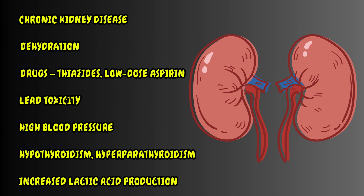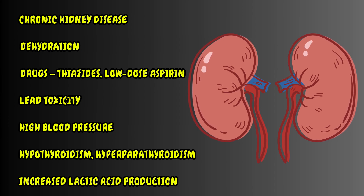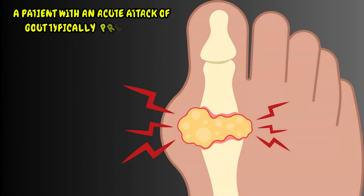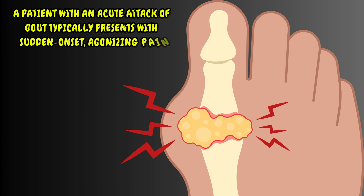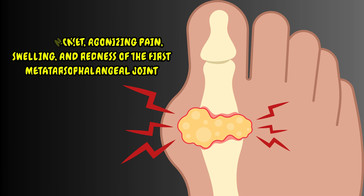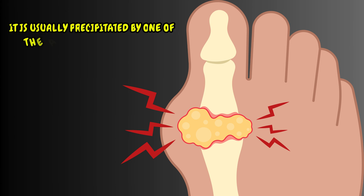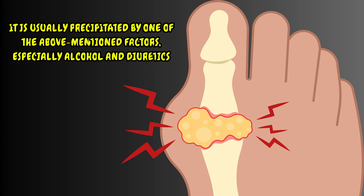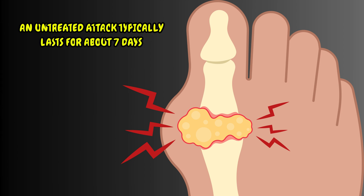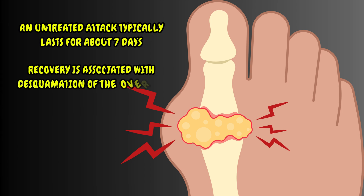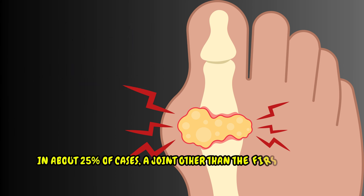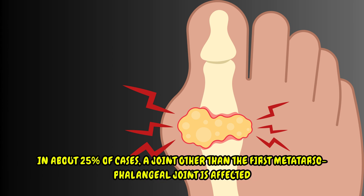Some cases of gout are idiopathic, meaning that they do not have an identifiable underlying cause. A patient with an acute attack of gout typically presents with sudden-onset agonizing pain, swelling, and redness of the first metatarsophalangeal joint. It is usually precipitated by alcohol and diuretics. An untreated attack typically lasts for about seven days, and recovery is associated with desquamation of the overlying skin. In about 25% of cases, a joint other than the first metatarsophalangeal joint is affected.